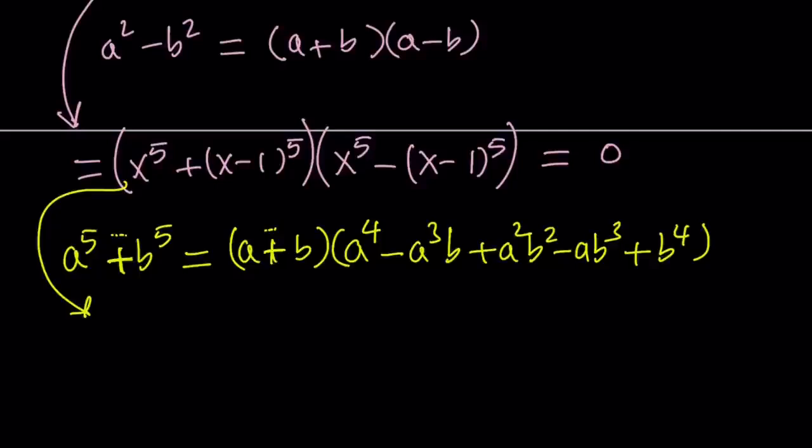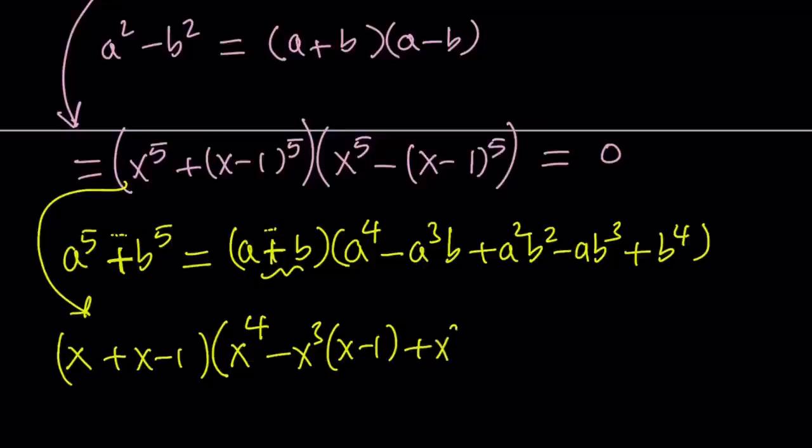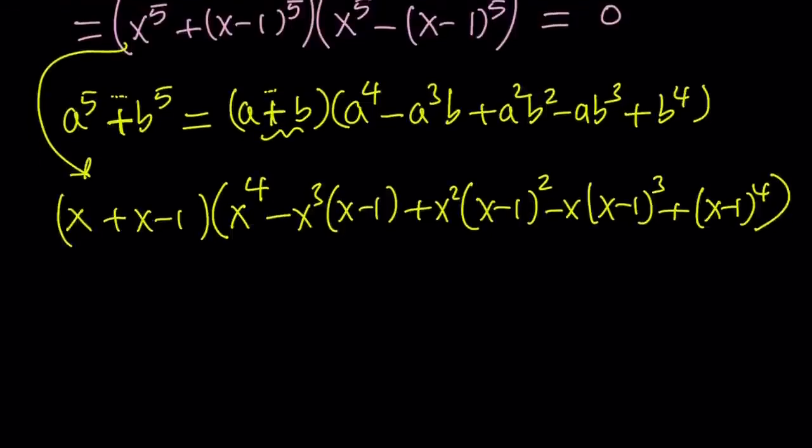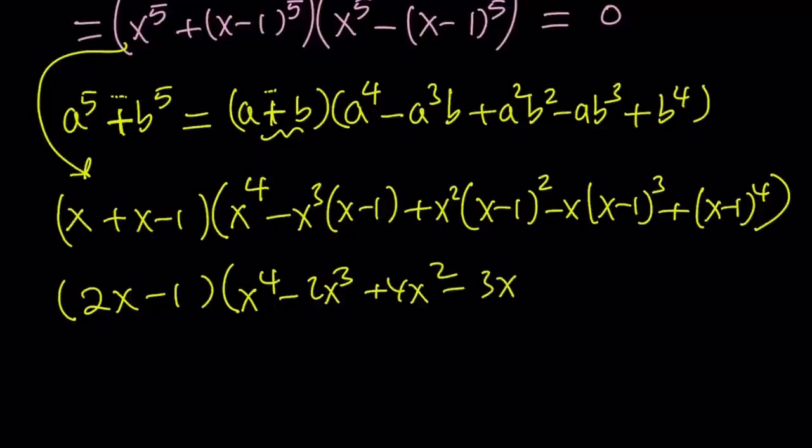Let's go ahead and do the sum first. So we're going to get x plus x minus one, this is the a plus b part, that gives you an idea about one of the solutions. And the second one is going to be x to the fourth minus x cubed times x minus one plus x squared times x minus one squared minus x times x minus one cubed, and finally plus x minus one to the fourth power.